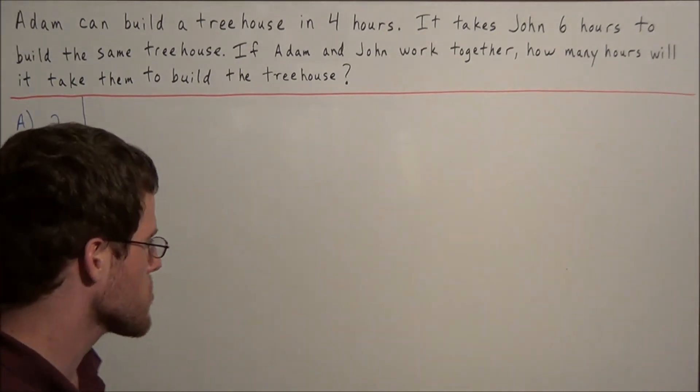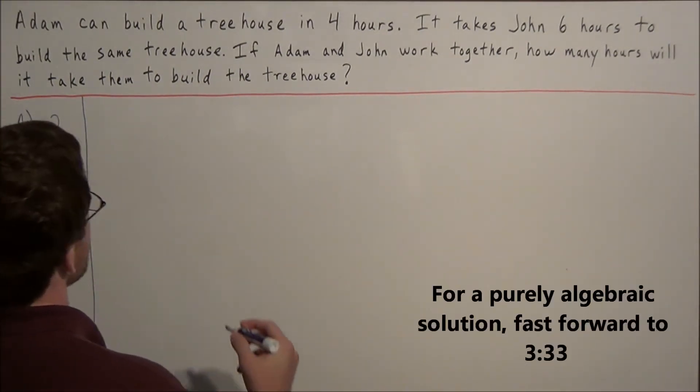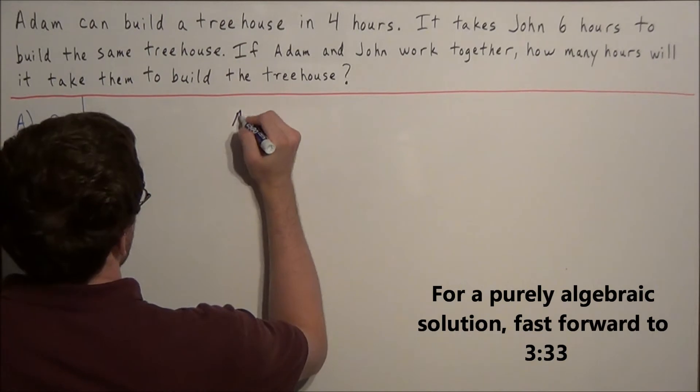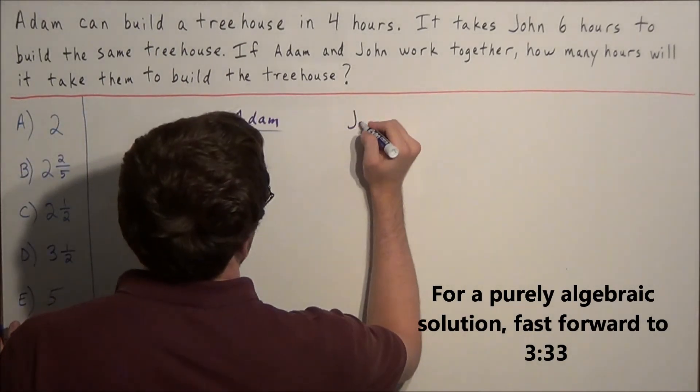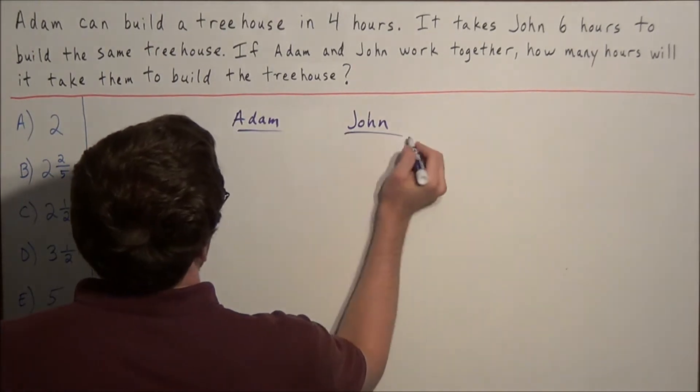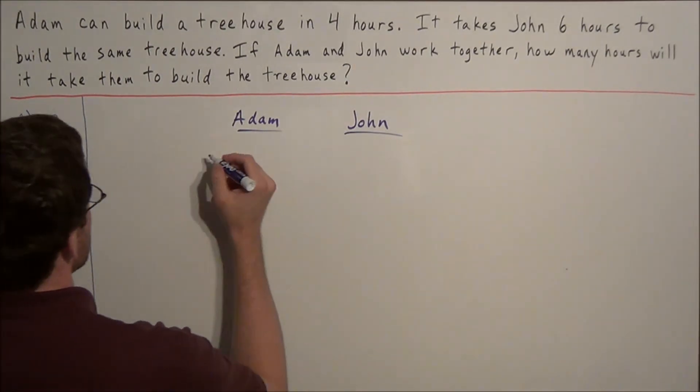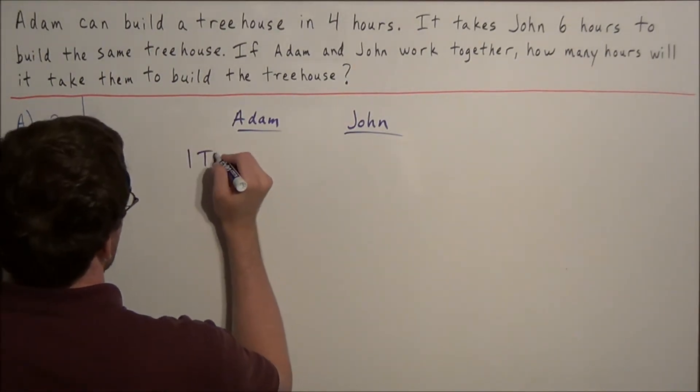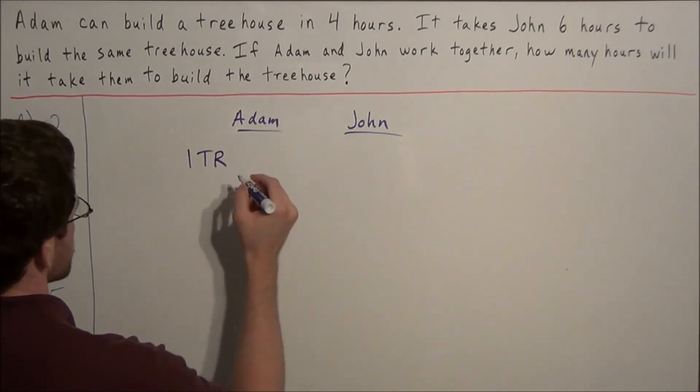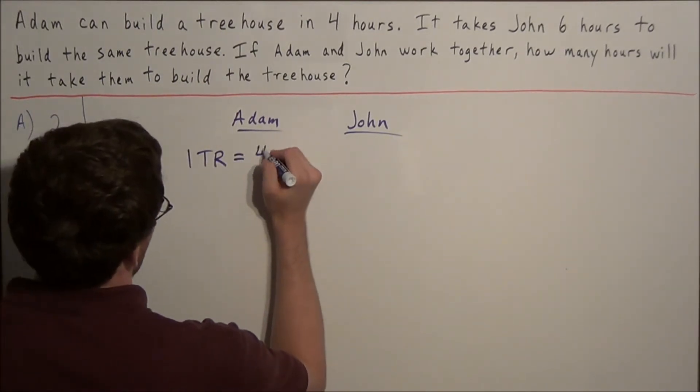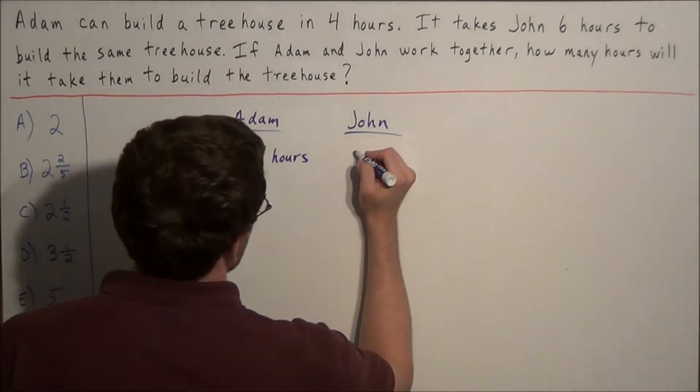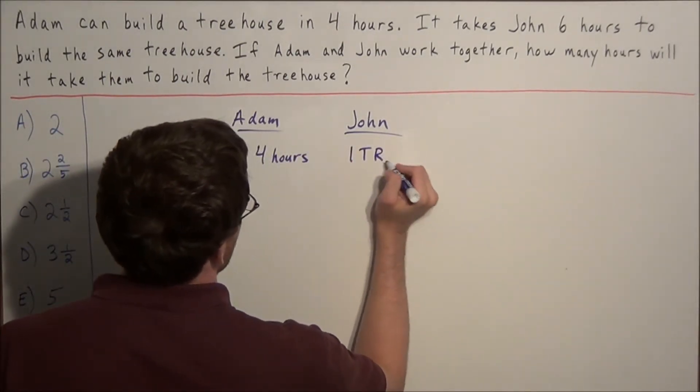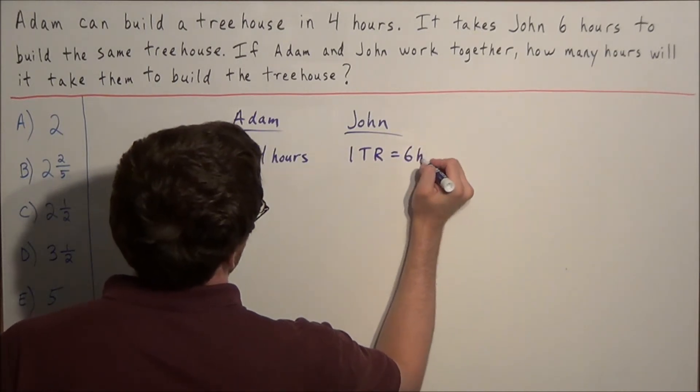For this problem I like to make use of a chart. We have Adam and we have John. We know that Adam can build one treehouse, we'll abbreviate TR for treehouse. He can build one treehouse in four hours. And John can build one treehouse in six hours.